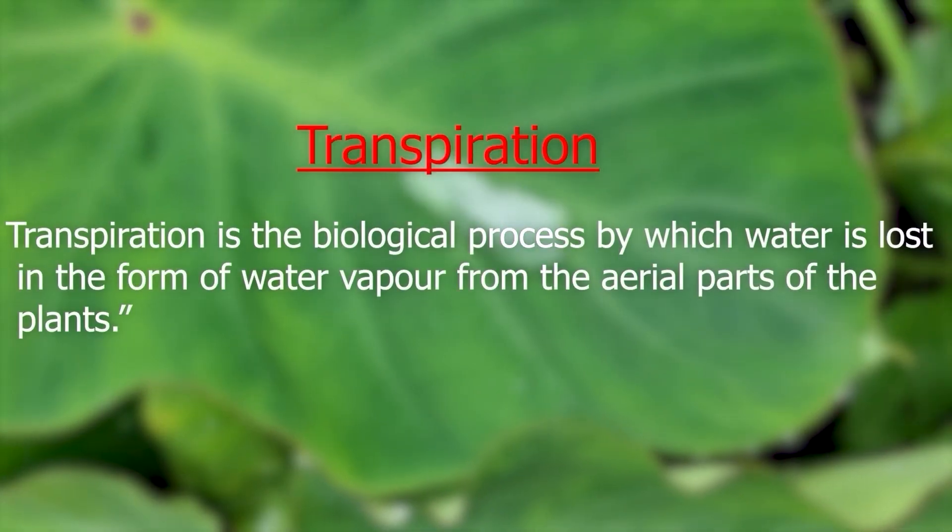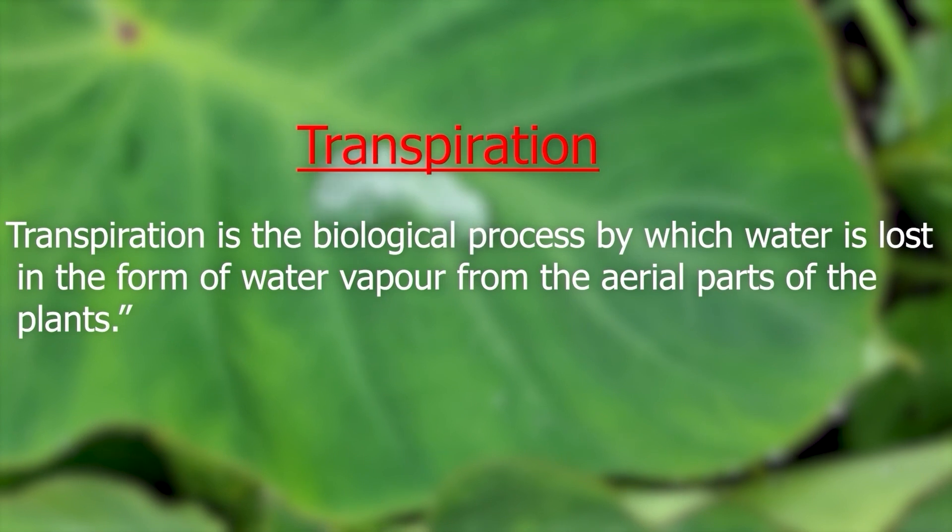Transpiration is the biological process by which water is lost in the form of water vapor from the aerial parts of plants. Like all living organisms, plants require a system to discharge excess water from their body. This process is known as transpiration, and it is generally the evaporation of water from the surface of the leaves. During transpiration, water molecules in the plant tissue are removed from the aerial parts of the plants. Only a small amount of water absorbed by the plant is utilized in growth and development; the rest is eliminated through transpiration. It is responsible for transporting minerals from soil throughout the plant, cooling the plant through evaporation, moving sugars and plant chemicals, and maintaining cell pressure.